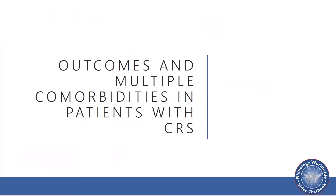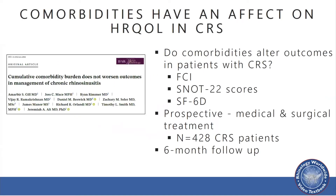Now that literature is growing correlating the FCI and comorbidities within CRS, what about outcomes using these measures? A paper by Gil et al. demonstrated that the cumulative comorbidity burden does not worsen outcomes in management of CRS. The specific question was: do comorbidities alter outcomes in patients with CRS? They used the FCI score, SNOT-22 score, and the SF-6D, with patients looked at prospectively with both medical and surgical treatments.